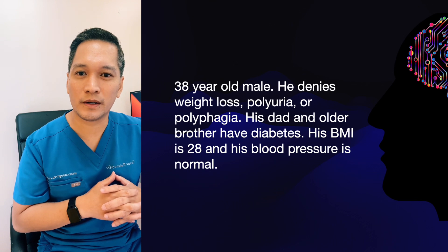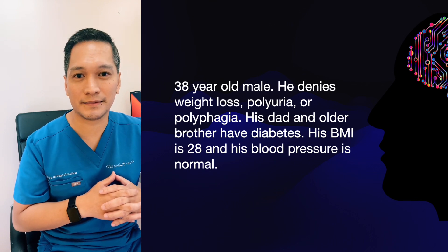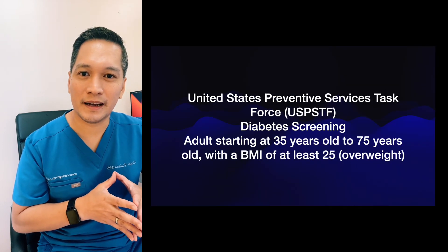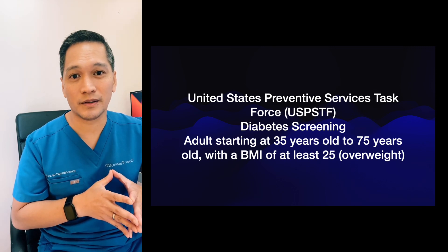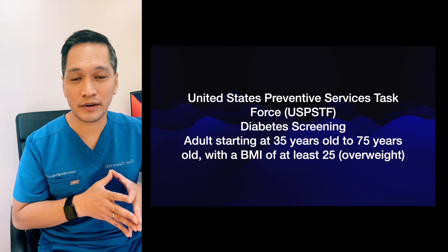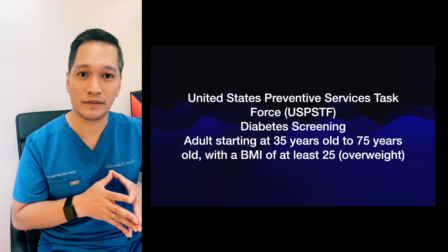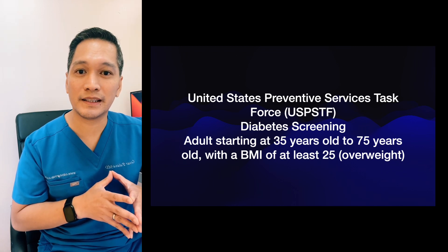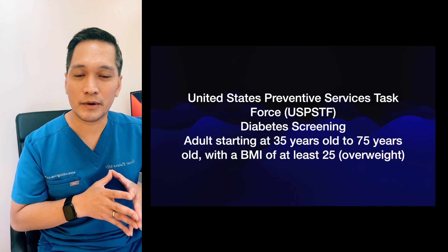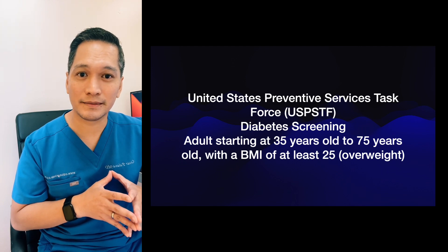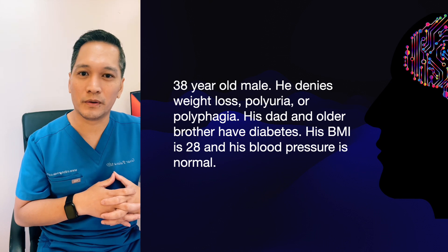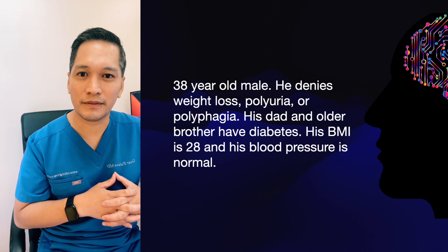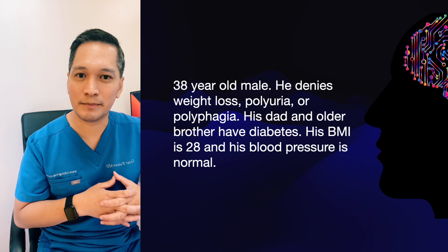Let's look at one of the screening criteria for diabetes. The USPSTF is the easiest to remember. It states that any adults starting at 35 years of age to 75 years old with a BMI of at least 25 should be screened for diabetes. Since patient X is over 35 years old with a BMI over 25, we order a comprehensive metabolic panel, a CBC, and a hemoglobin A1c.